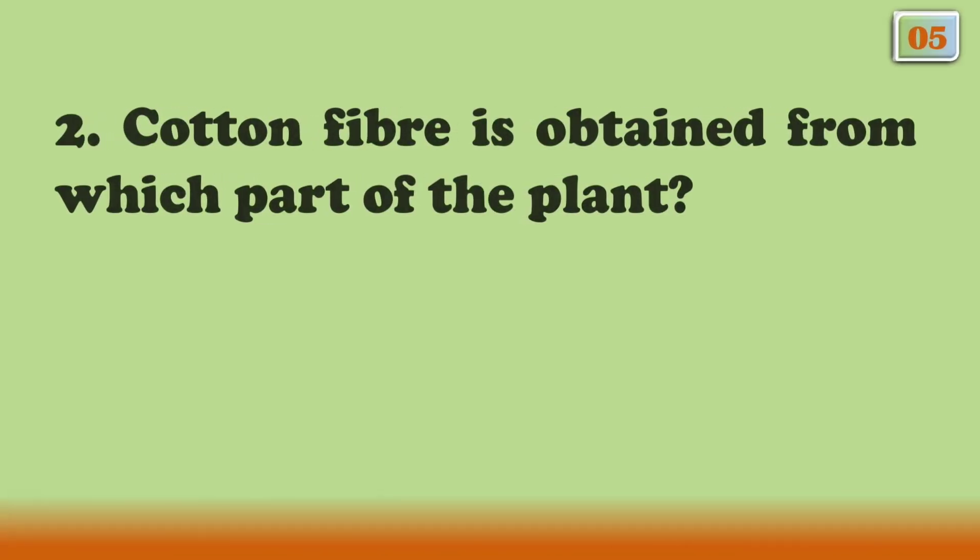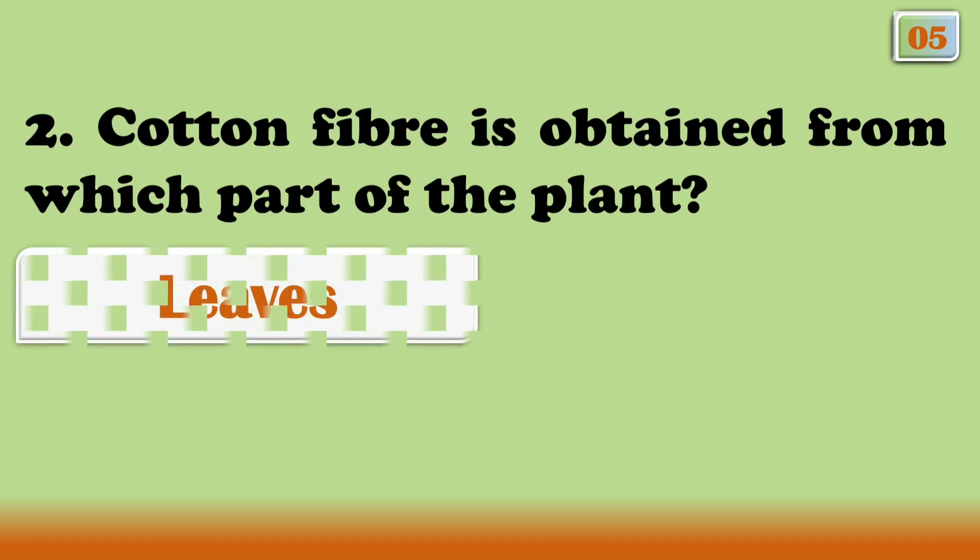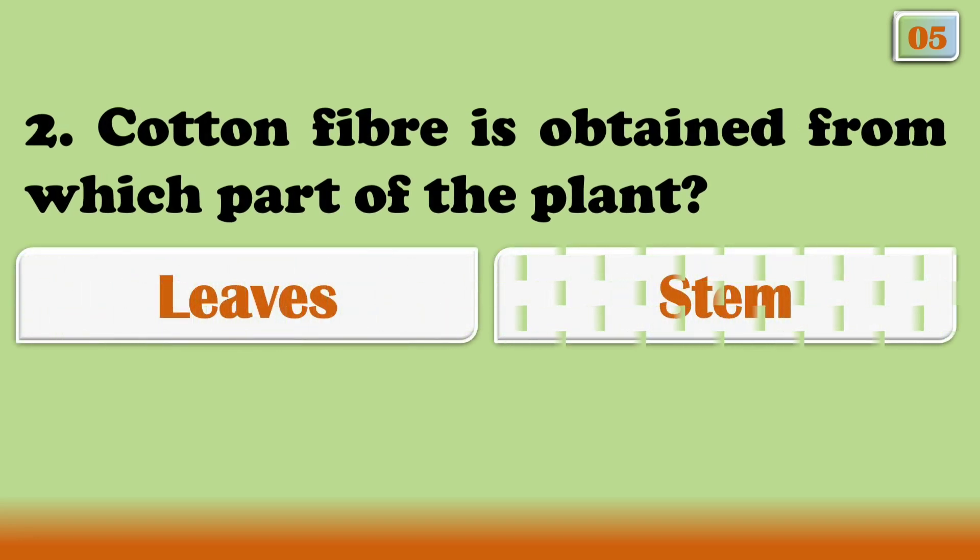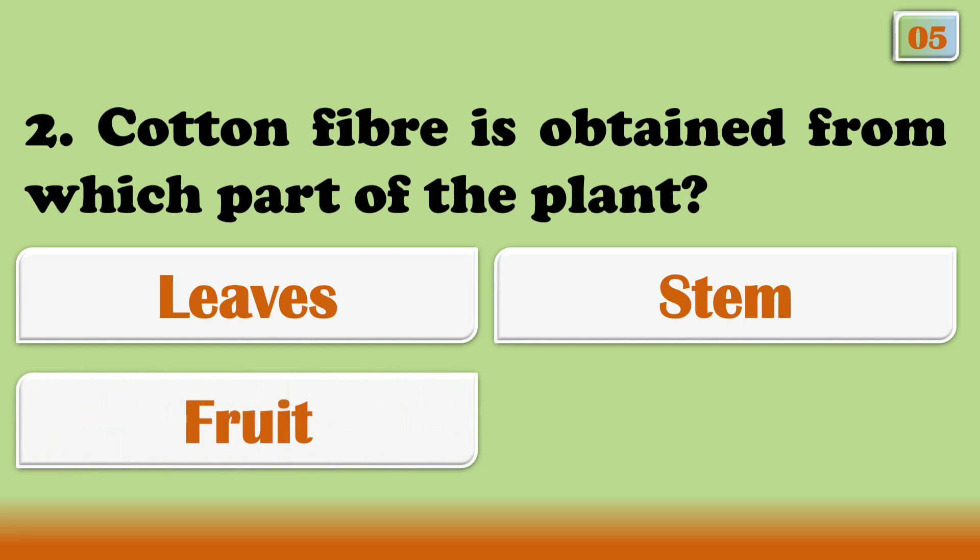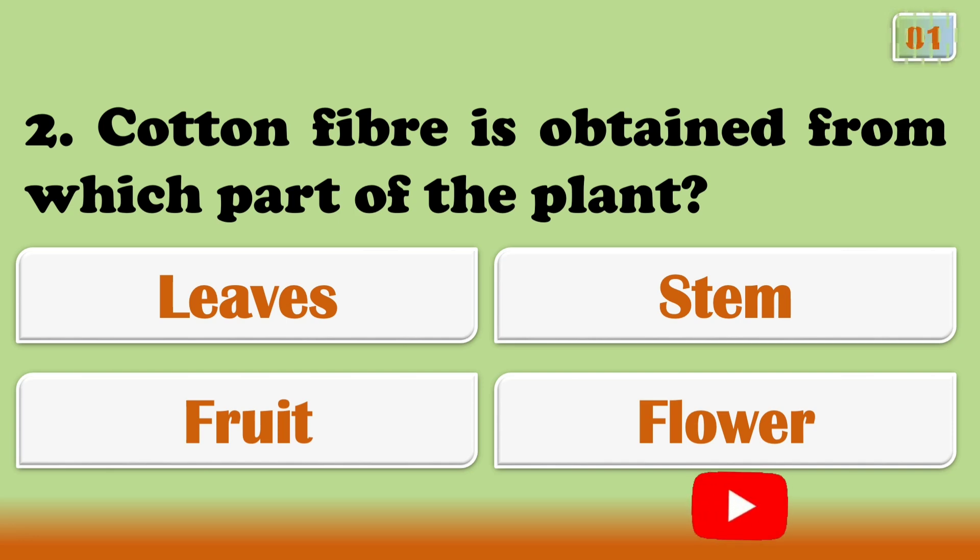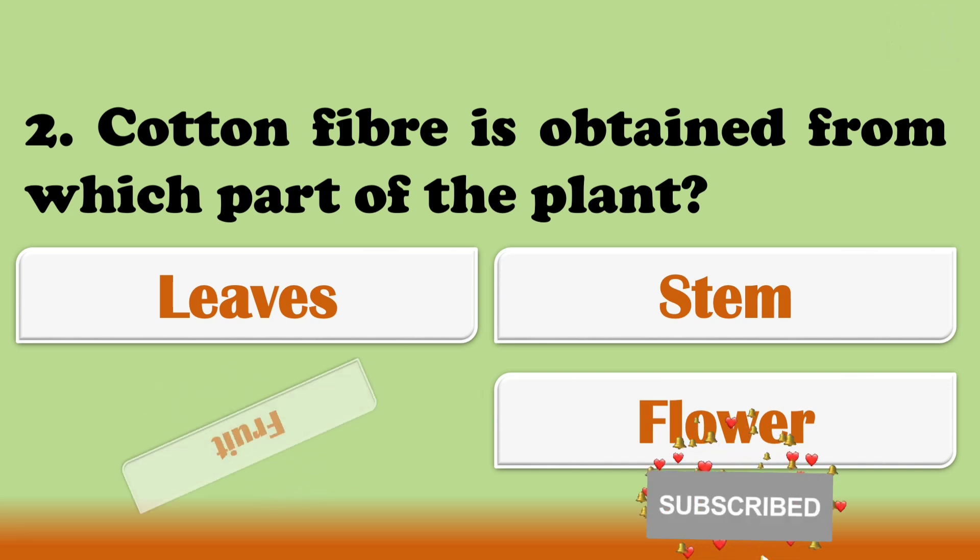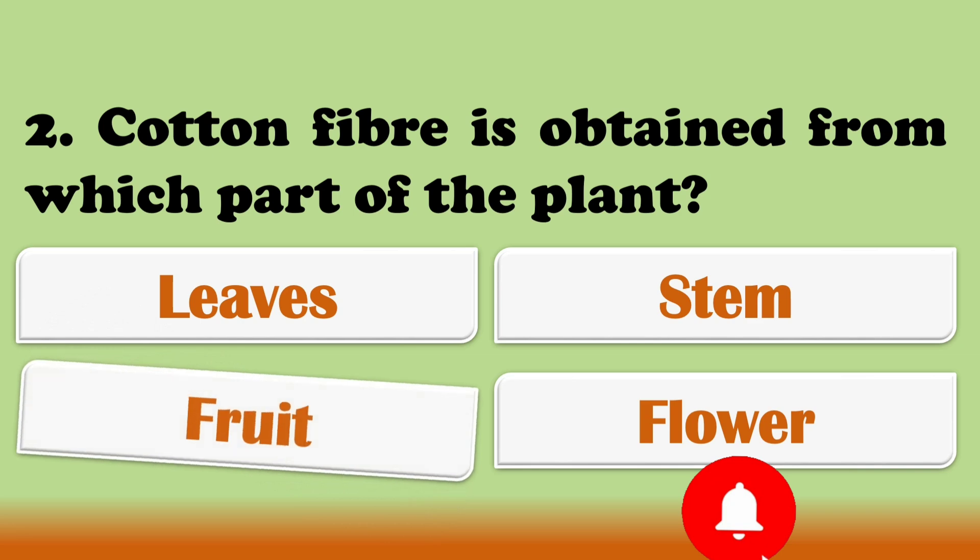Cotton fiber is obtained from which part of the plant? Options are A. Leaves, B. Stem, C. Fruit, or Option D. Flower. The right answer is Fruit.